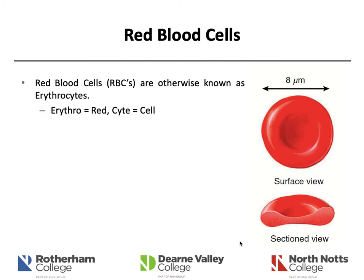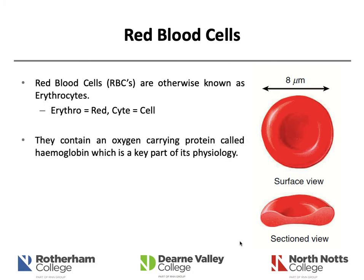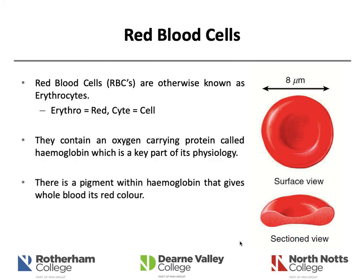Red blood cells are otherwise known as erythrocytes — 'erythro' means red, 'cyte' means cell. They contain an oxygen-carrying protein called haemoglobin, which is a key part of their physiology. There is a pigment within haemoglobin that gives whole blood its red colour, and given that the majority of blood's mass is red blood cells, that is what gives whole blood its red appearance.